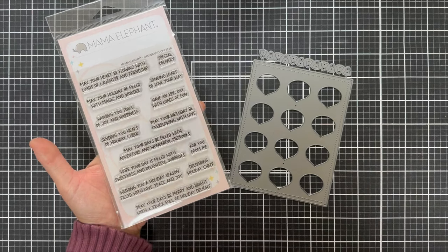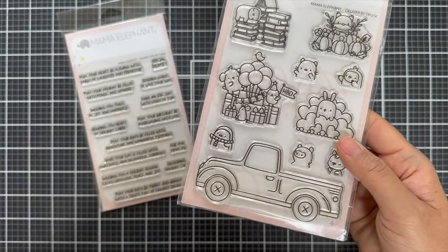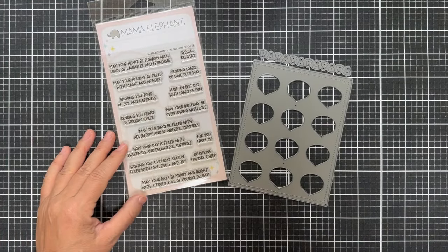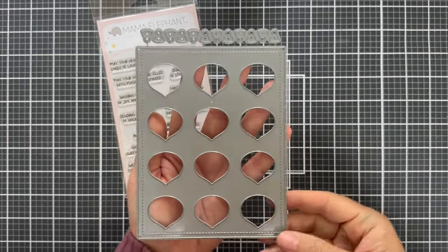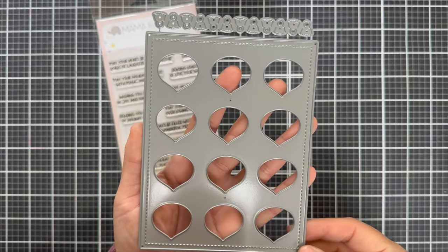So a great sentiment stamp set that pairs perfectly with the Deliver by Truck stamp set with the coordinating creative cuts. So you can pair those with the truck because there's lots of loads of sentiments. We're also going to be featuring the new ornament grid cover creative cut.